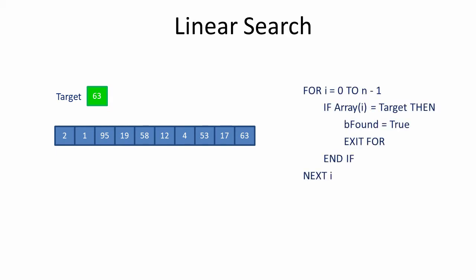Let's take the simple linear search, for example. There are ten items of data here, which take up a certain amount of memory when the algorithm is running. The algorithm needs a little extra memory to store the target value and the pointer i, which is used to control the loop and to reference each element of the array in turn. If we were to double the amount of data being searched, then in the worst-case scenario of having to examine every item in the list, we would double the time it takes to find the target. So the time taken is proportional to the amount of data. The algorithm has linear time complexity.